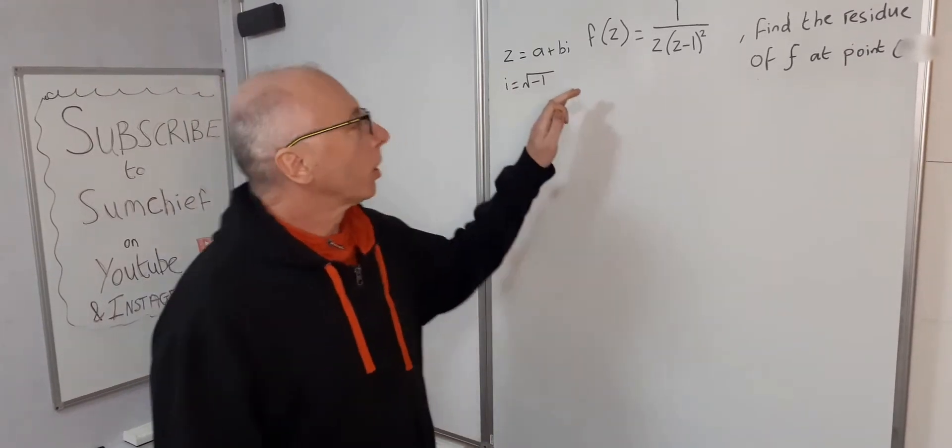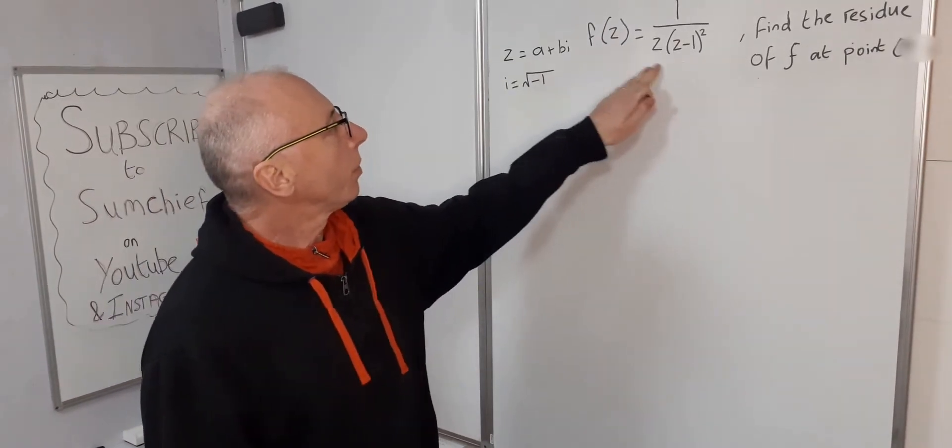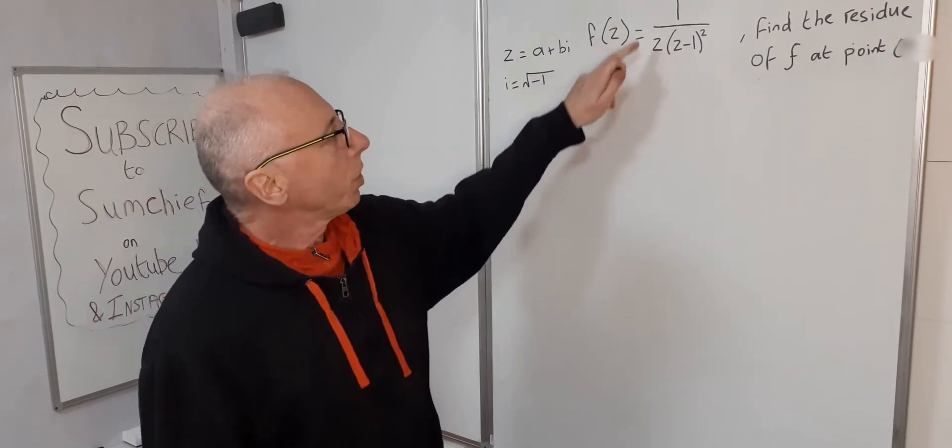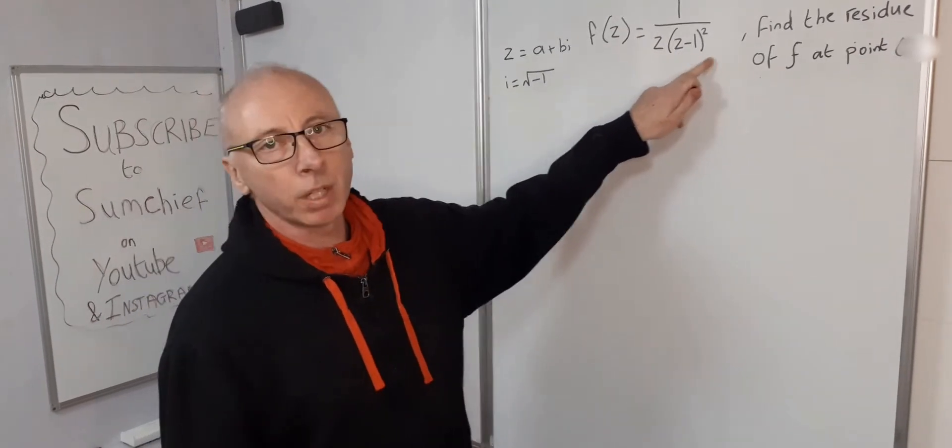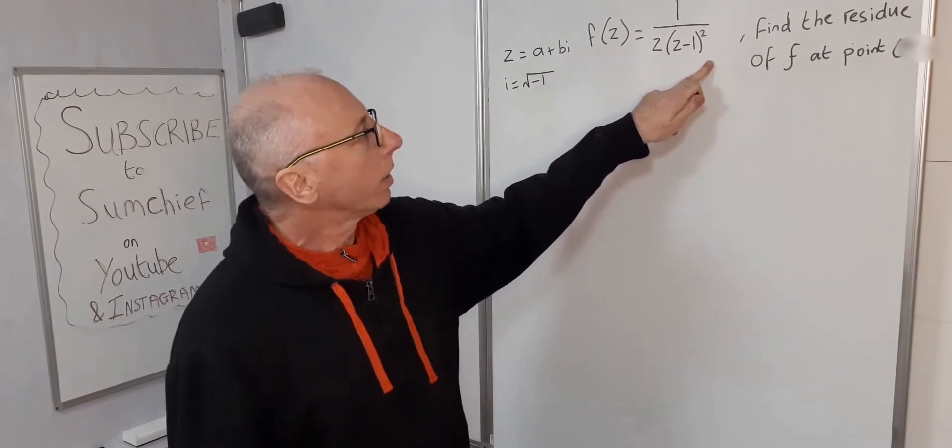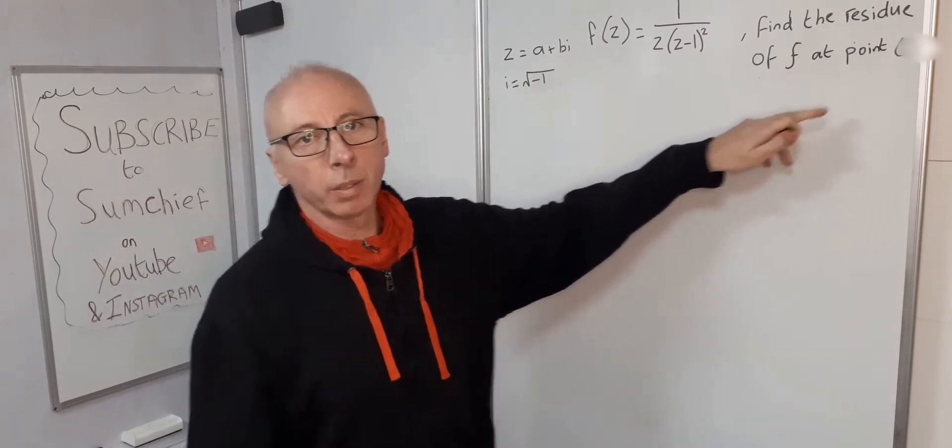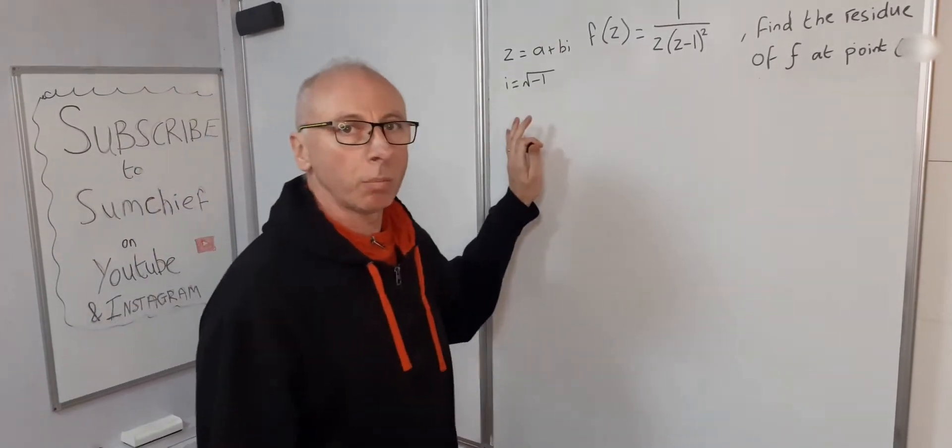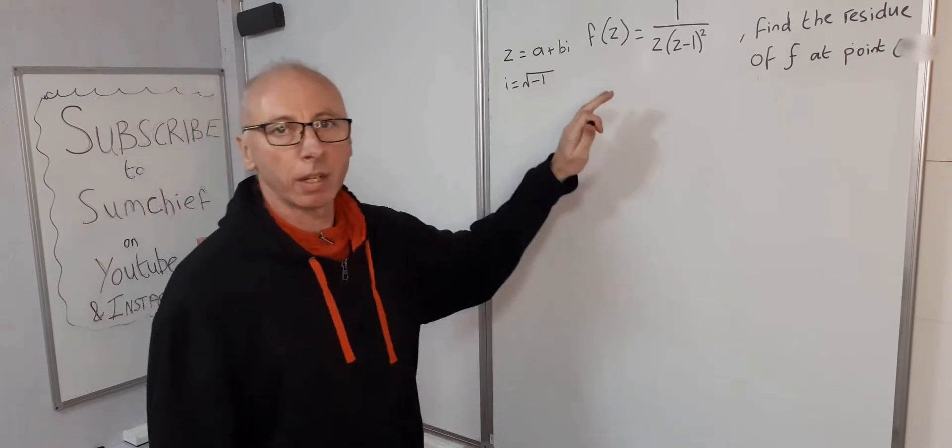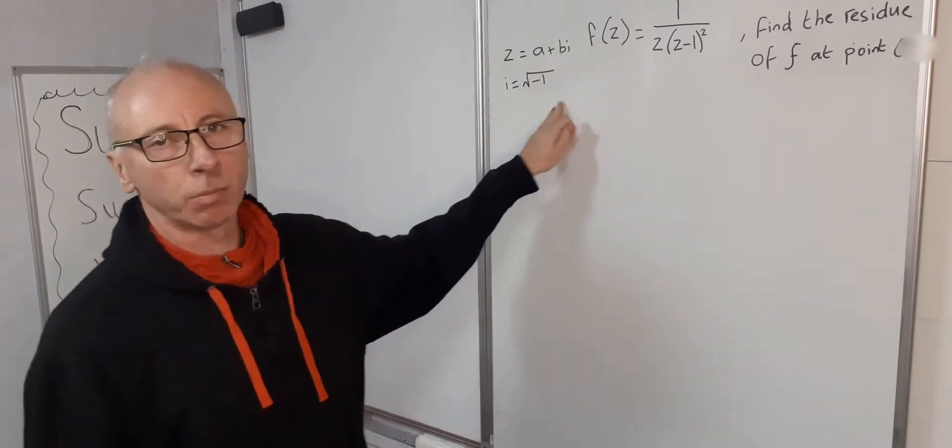In this video we're going to look at finding the residue of this function, the reciprocal of z times z minus 1 squared, and the residue of that is going to be at z equals 0. Normal rules of complex analysis: z is a plus bi and i is square root minus 1.